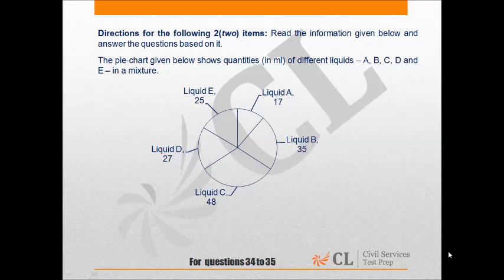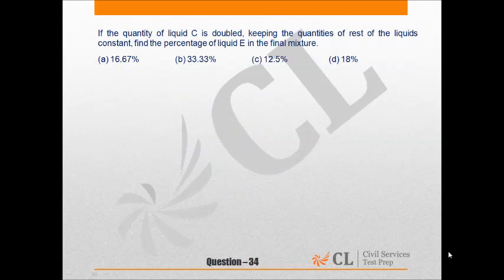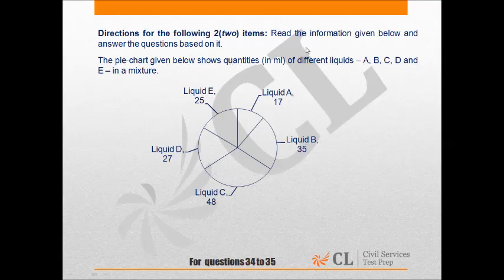Let us discuss question number 34 and 35. The pie chart given below shows quantities in ml of different liquids A, B, C, D, and E in a mixture. If the quantity of liquid C is doubled keeping the quantities of rest of the liquids constant, find the percentage of liquid E in the final mixture.